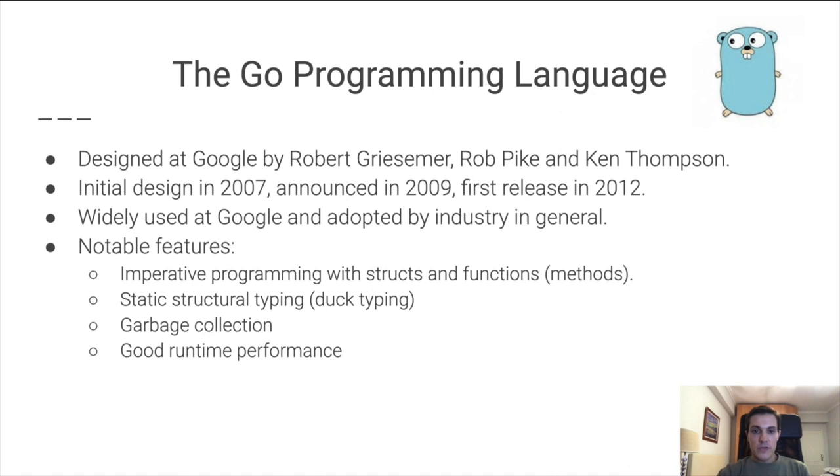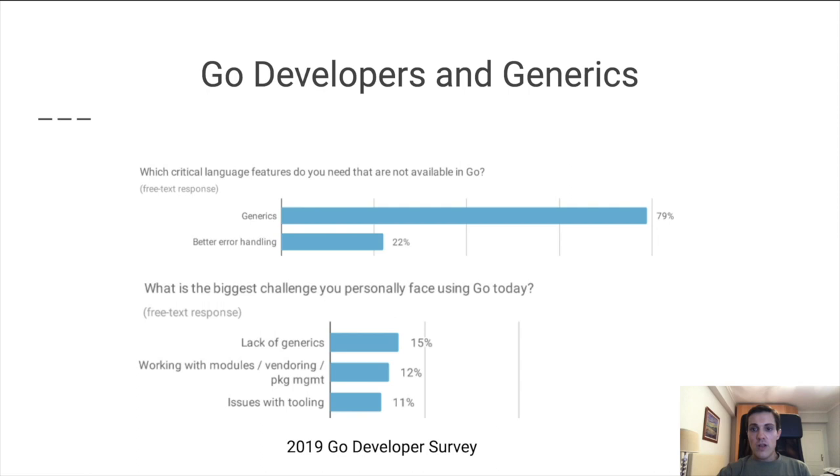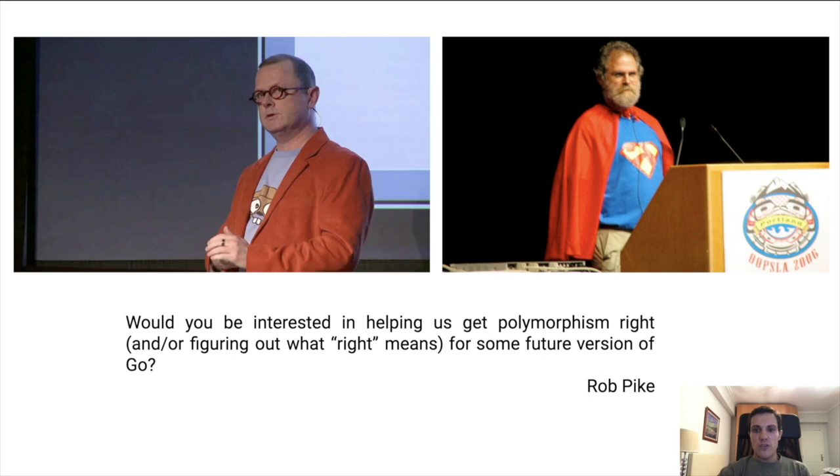But it has a notably absent feature: generics. Developers have been quite vocal about this absence. If you look at data from the Go developer survey from last year, 15% of all survey participants highlighted the lack of generics as the biggest challenge in using Go. By this point, the Go team really wanted to explore generics for Go.